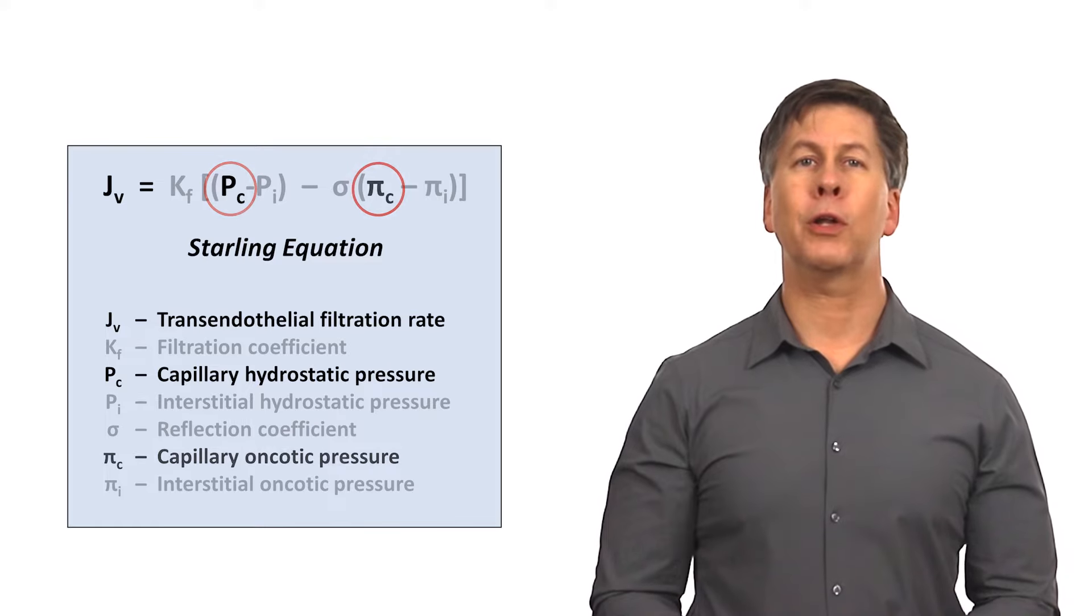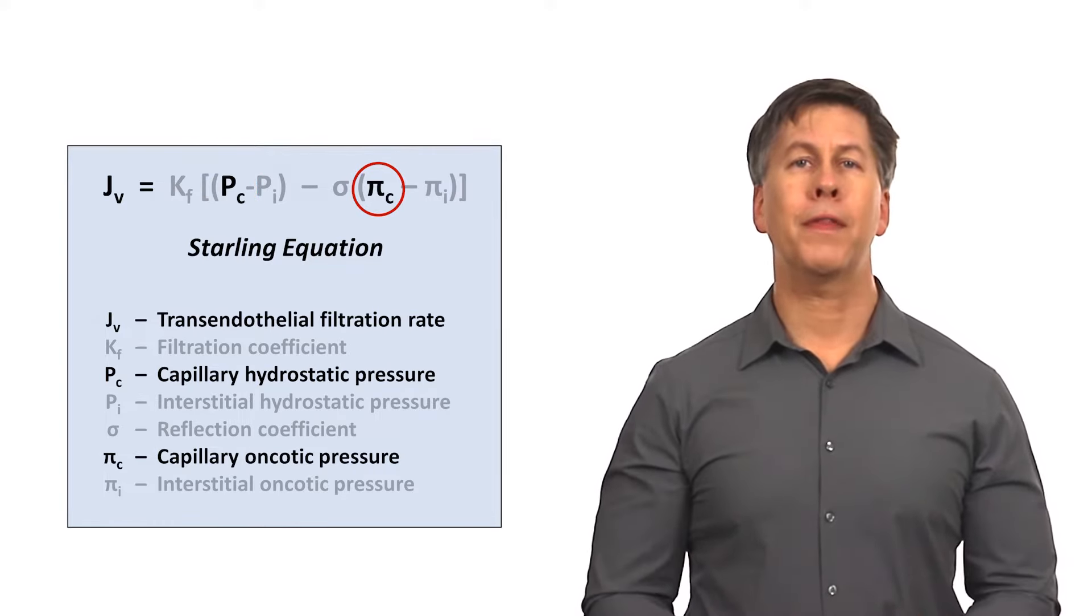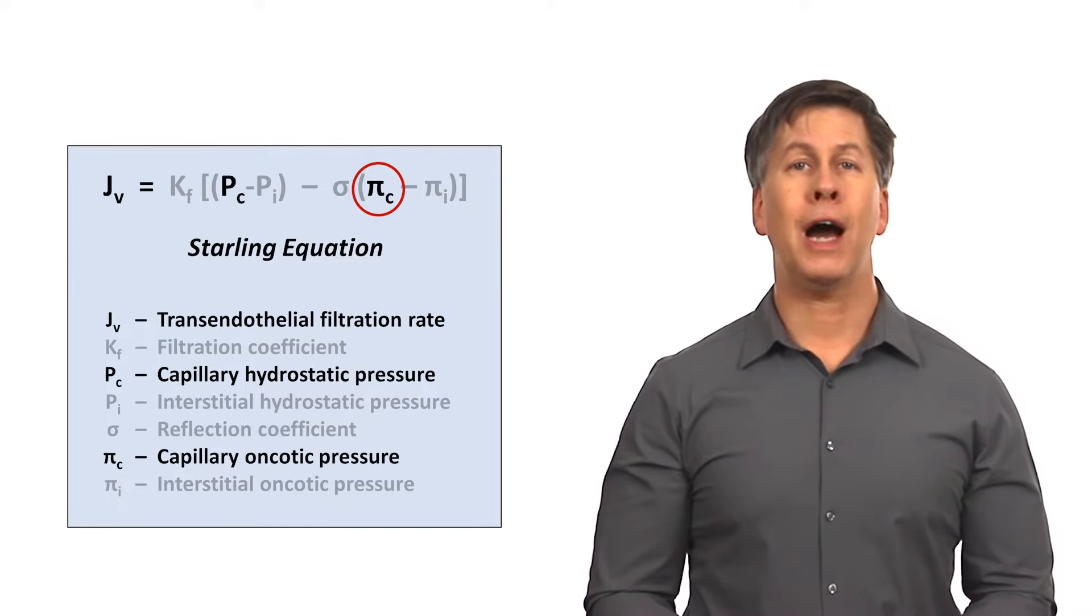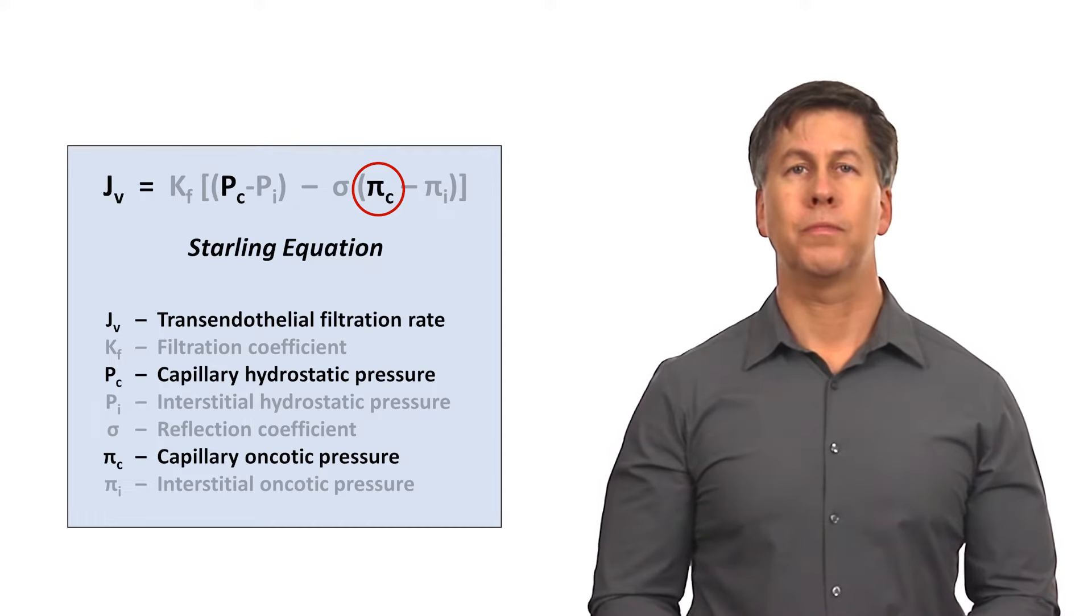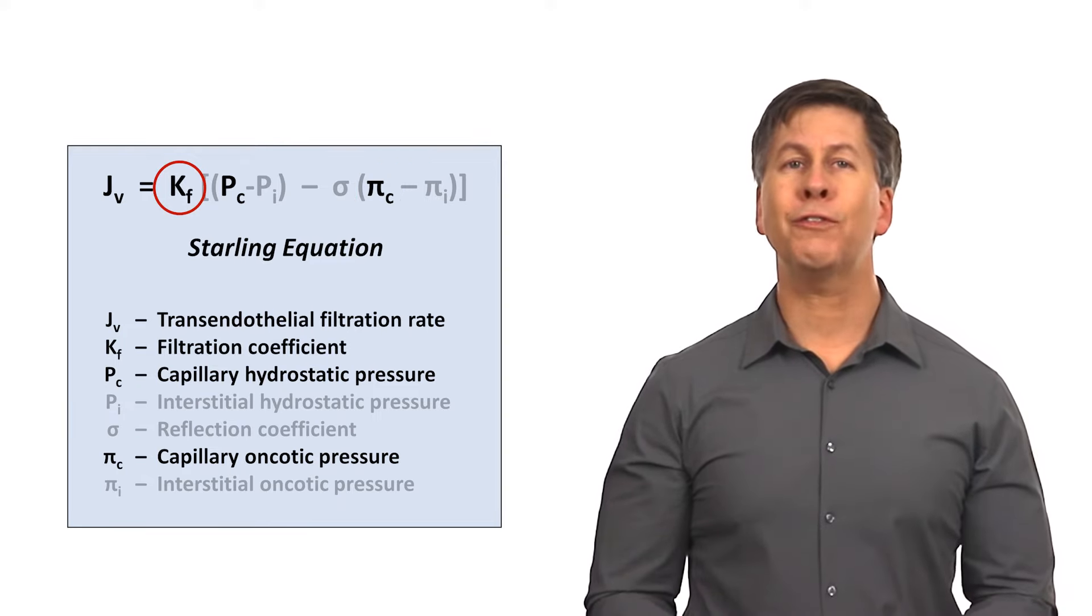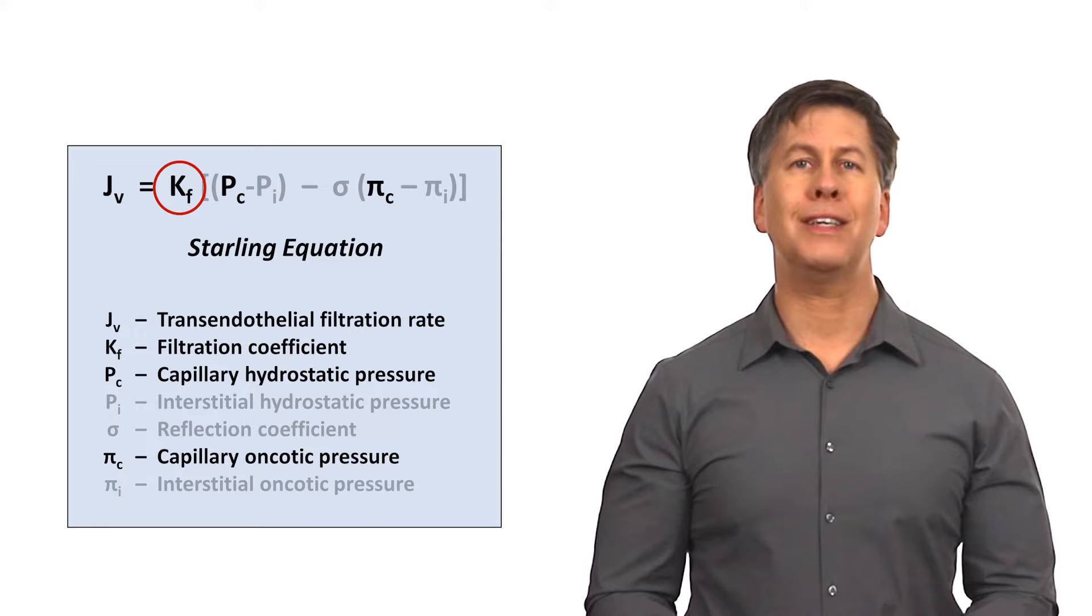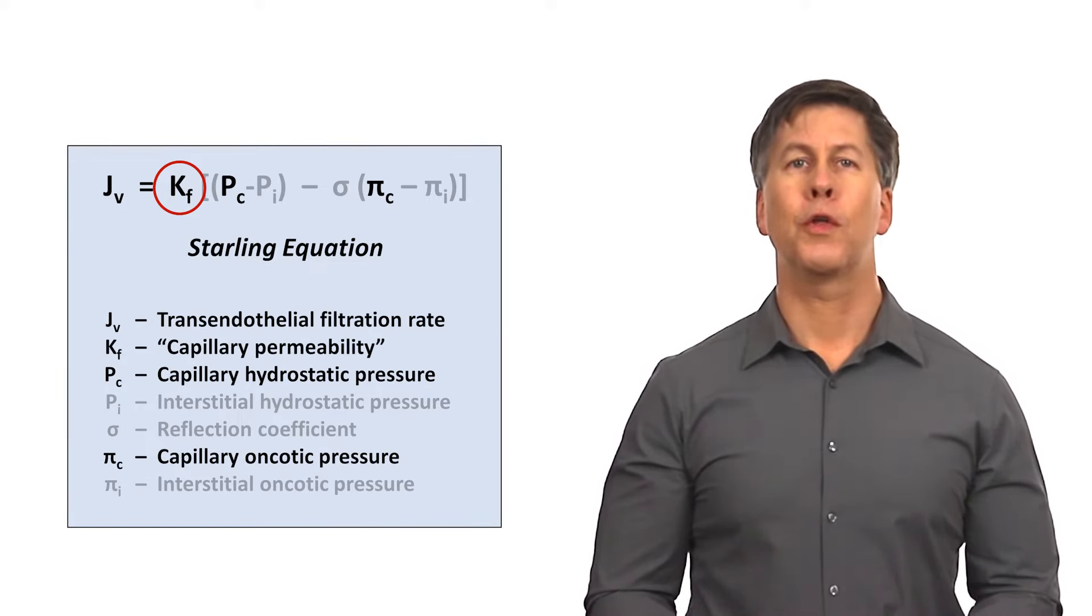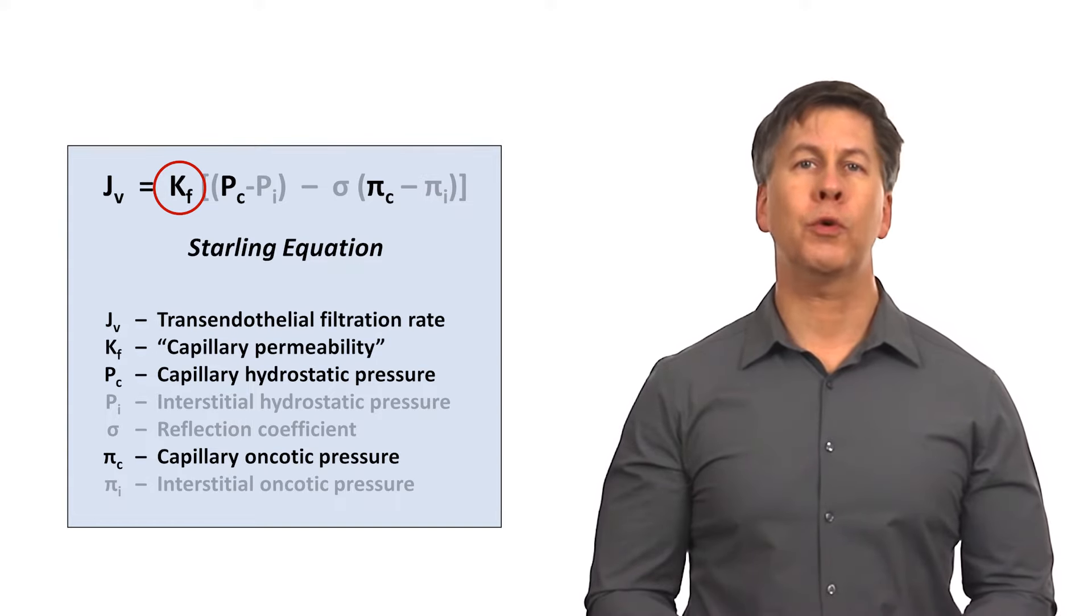Second is the capillary oncotic pressure, which is largely determined by the concentration of the protein albumin in the blood. The higher the albumin, the less blood is squeezed out into the interstitial space. And the last one is the filtration coefficient. There are several factors that impact this value, but one of them is the overall permeability of the capillary endothelium. The more permeable or leaky the capillary is, the more fluid will leak out.